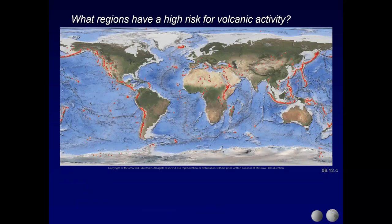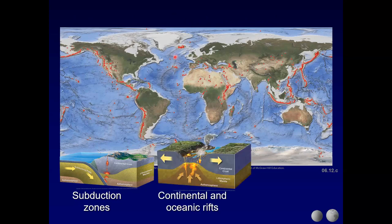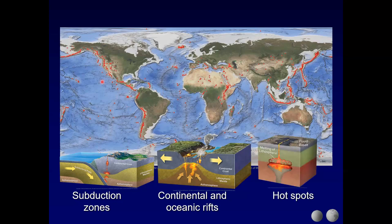What regions on Earth have a high risk for volcanic activity? Subduction zones, continental and oceanic rifts, and hotspots like Hawaii. Composite volcanoes are in highest concentration along the Pacific Ring of Fire, forming continental arcs and island arcs. Calderas are mostly subduction-related or occur over hotspots or rifts, such as the East African Rift. Shield volcanoes occur along lines or clumps of islands and submarine mountains, such as Hawaii and the Galapagos.